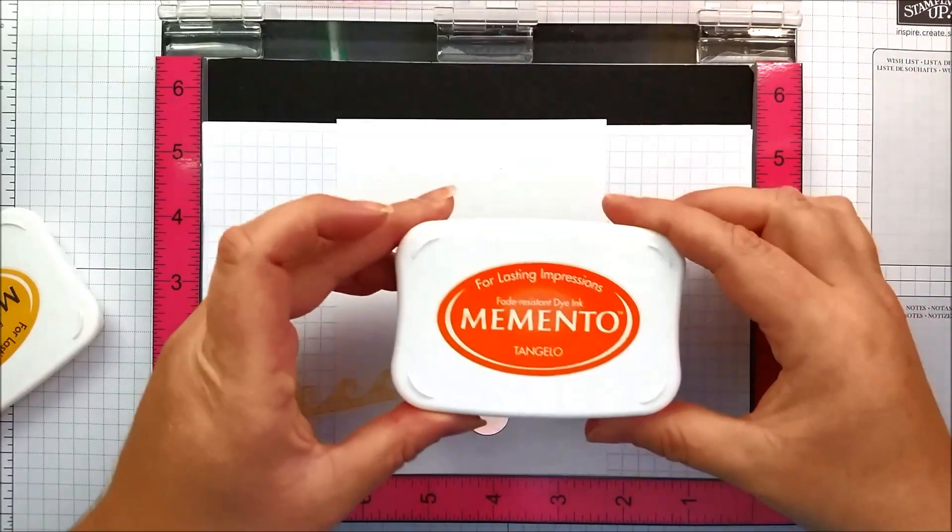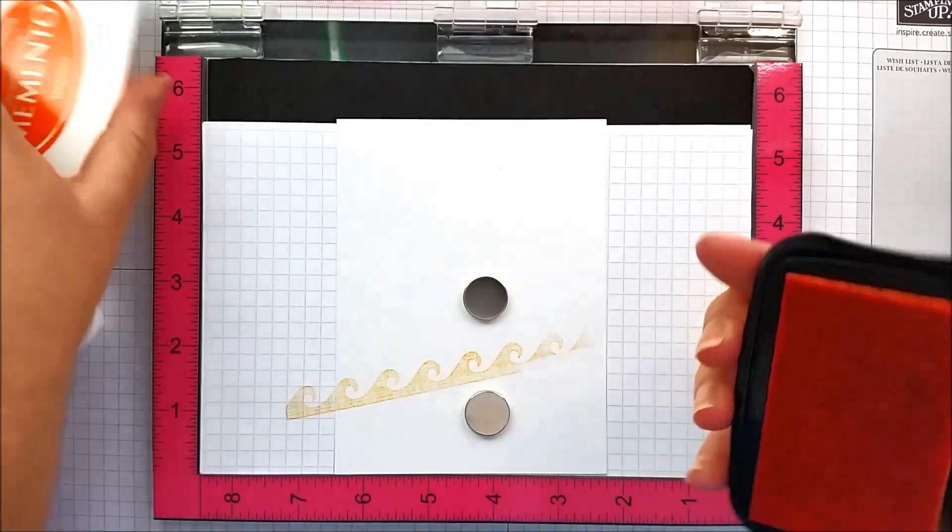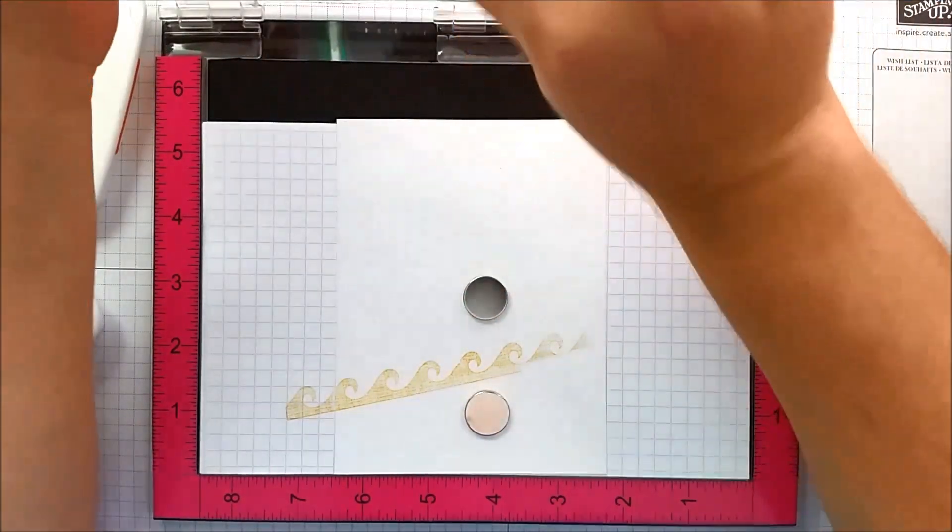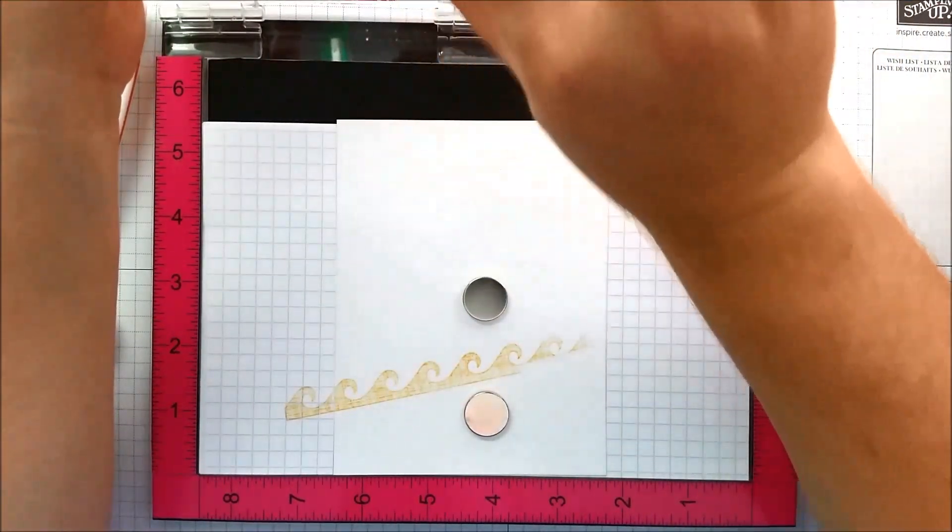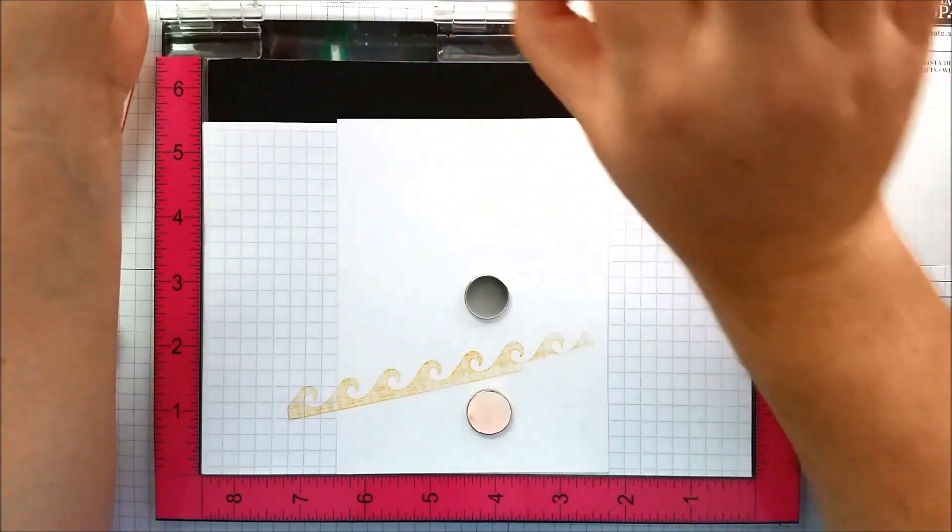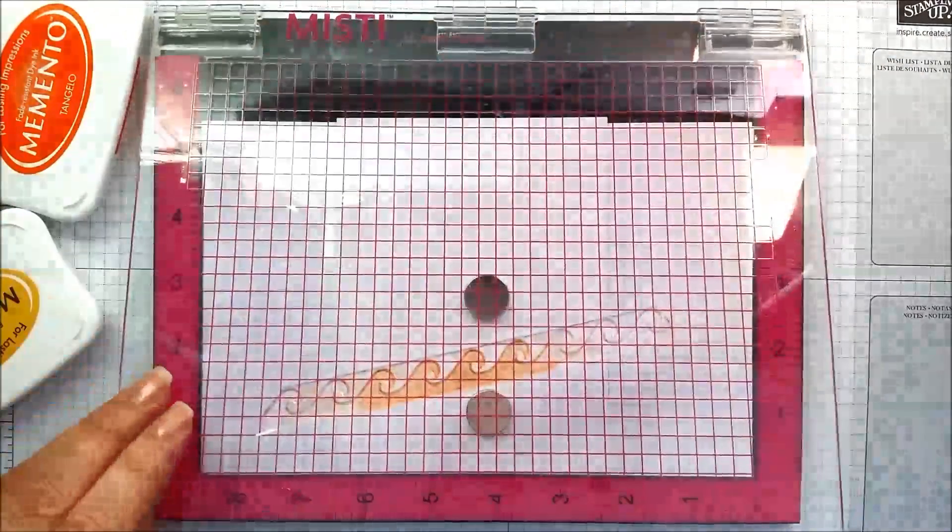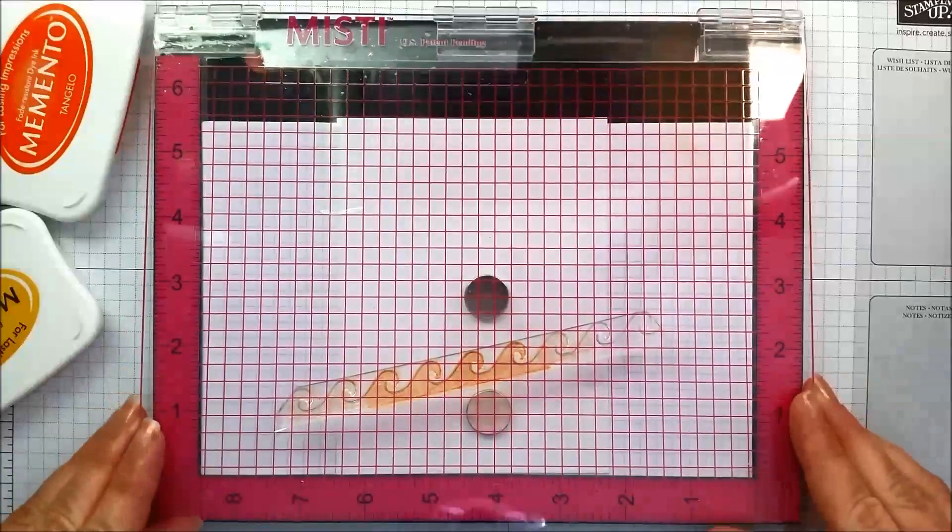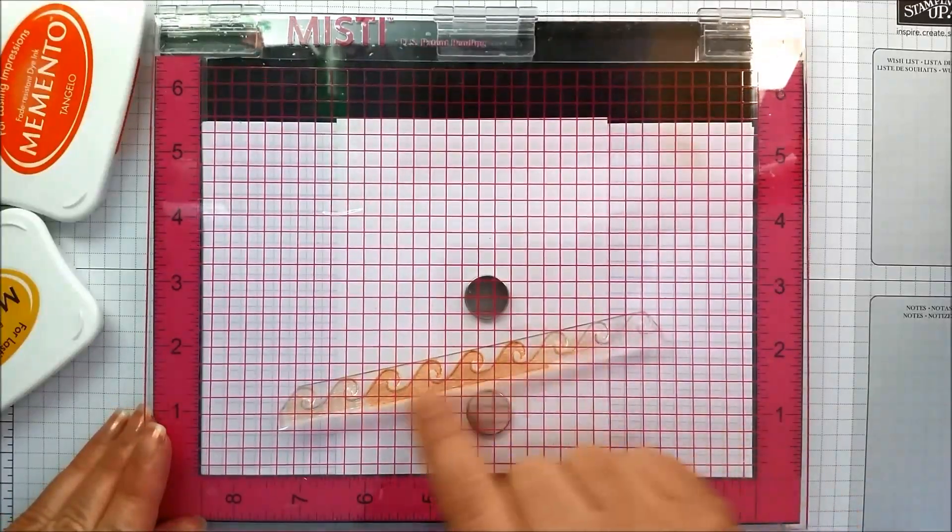Now let's take our tangelo or orange color and we're going to take that ink pad and apply it down the center. Okay so I only have ink there.